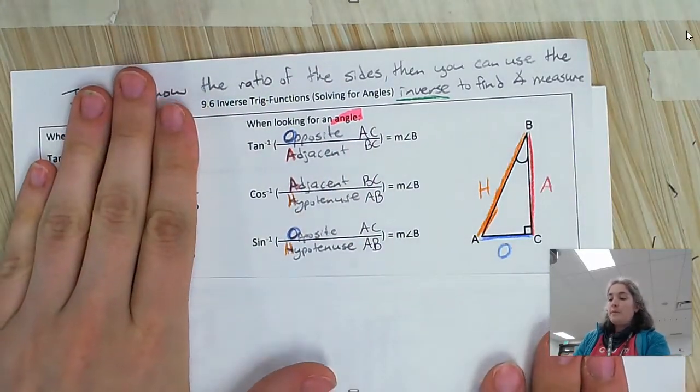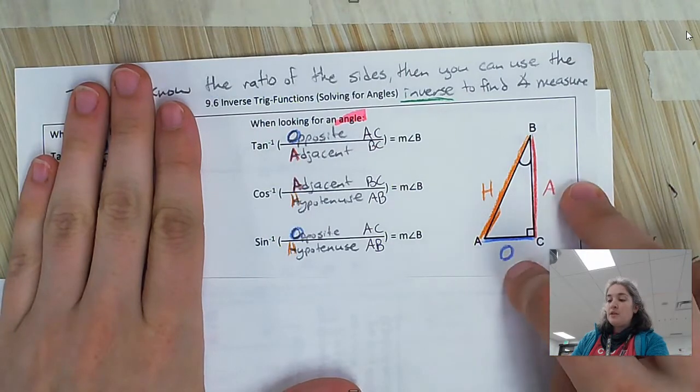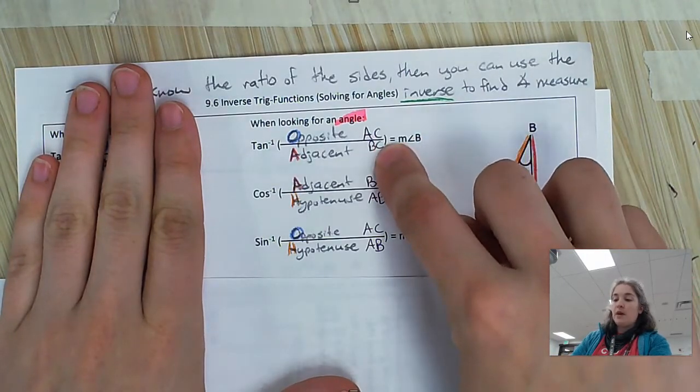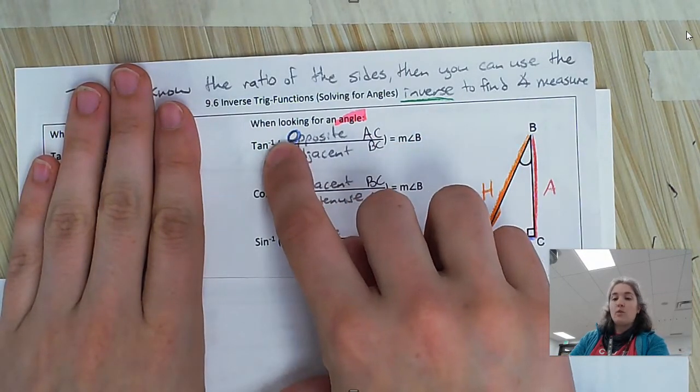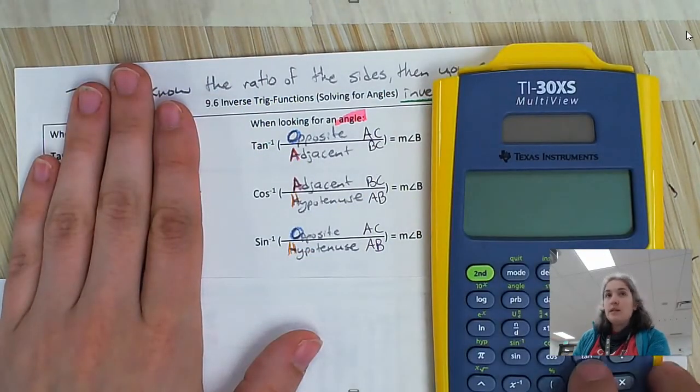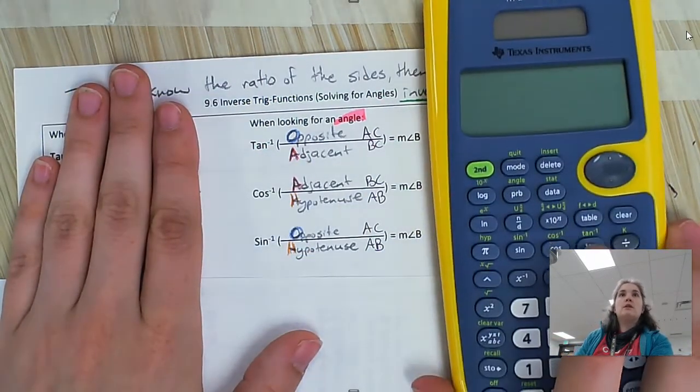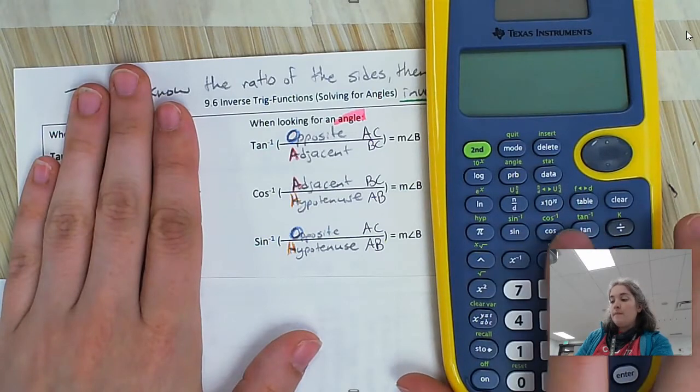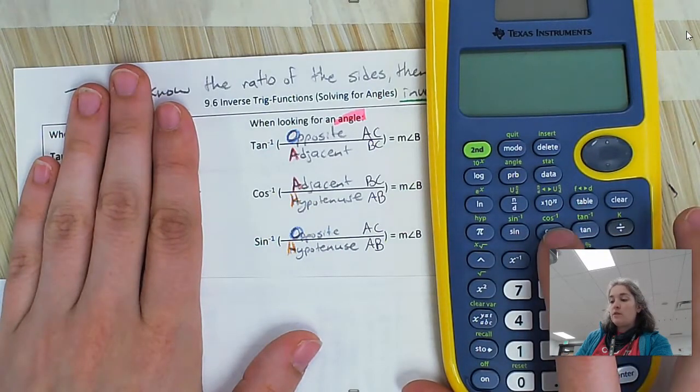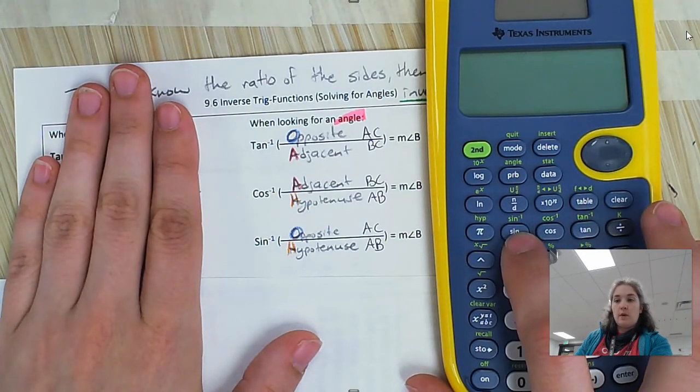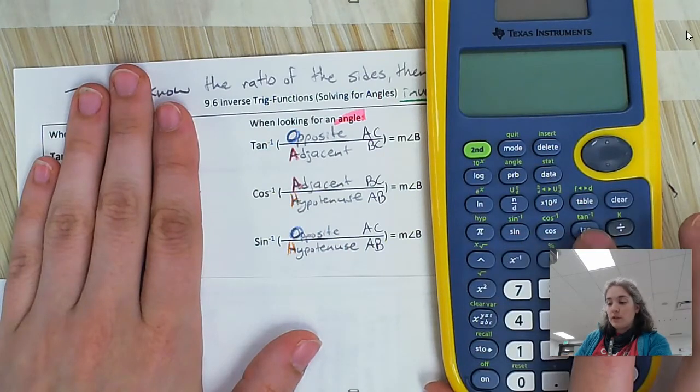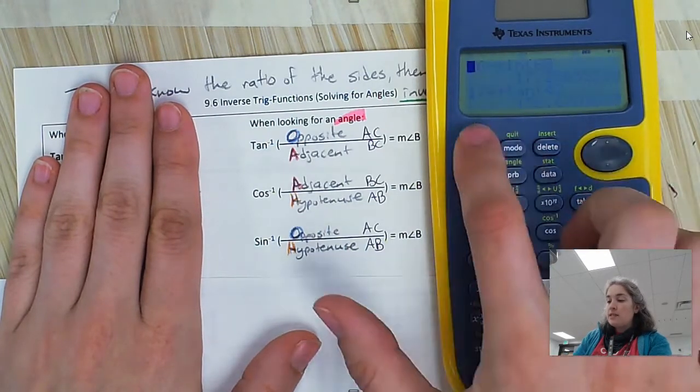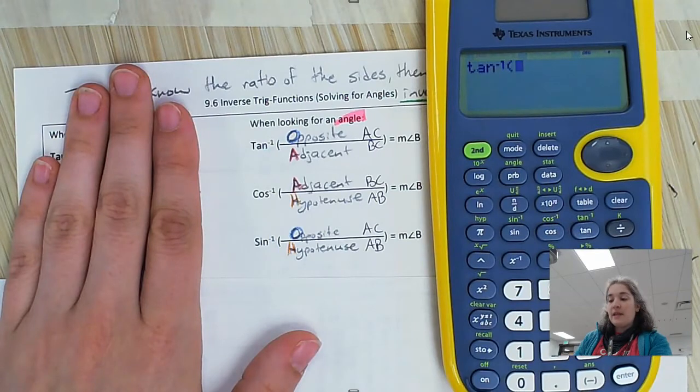So if you are missing angle B and you know the opposite and adjacent, you would plug in AC over AB. And this little negative one is on the calculator as well. So you can see right here in green, we've got inverse tangent, inverse cosine, inverse sine. That's what that means. It means inverse. So if you hit second, it will pop that in.